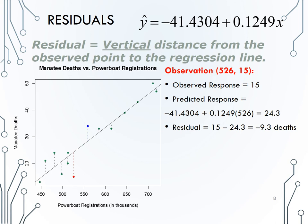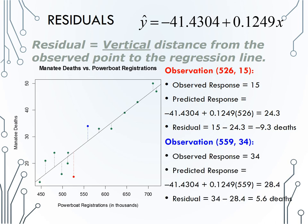Let's go through that same process for the blue dot. The observed value is 559 and 34, so the observed response is 34. The predicted response is calculated by plugging the x value, 559, into the equation.